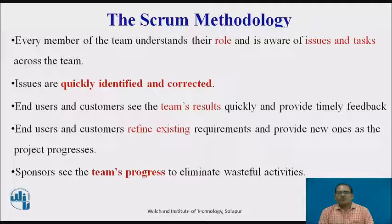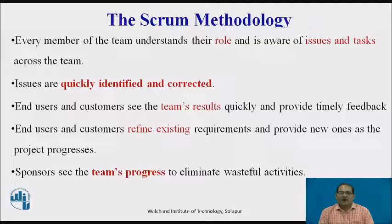Every member of the team understands their role and is aware of the issues and tasks across the team. Issues are quickly identified and corrected. Another integral component of Scrum is the different types of feedback loops used to ensure that end users and customers see the team's results quickly and provide timely feedback. End users and customers refine existing requirements and provide new ones as the project progresses. Sponsors see the team's progress as it takes place, eliminating wasteful activities such as formal and often repetitive status reports that detract from time spent on actually developing the project.